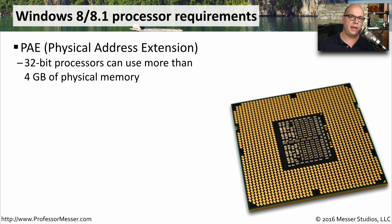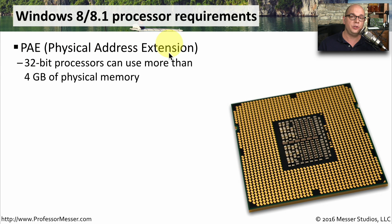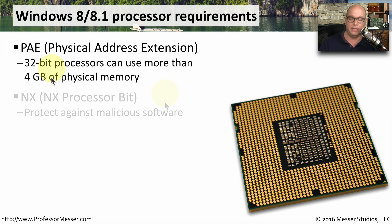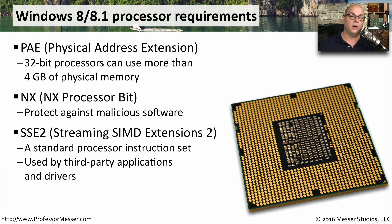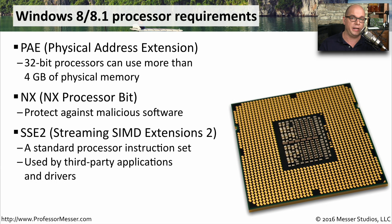Windows 8 began to really push the capabilities of technology, and there were certain requirements for processors to be able to run it. One of these requirements is PAE, or Physical Address Extension, which allows 32-bit operating systems to use more than 4 gigabytes of physical memory. You also need a processor that enables NX, the NX processor bit, which restricts malicious software from running in the processor. Your processor also needs to have enabled SSE2, the Streaming SIMD Extensions 2, an instruction set increasingly used by third-party drivers and applications.